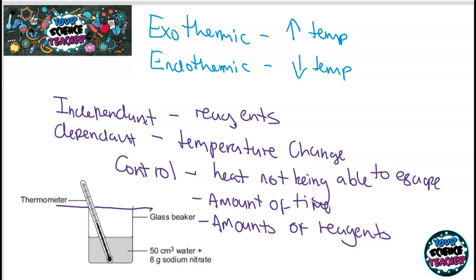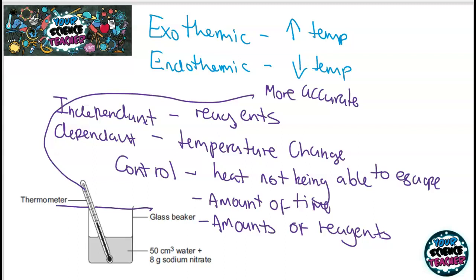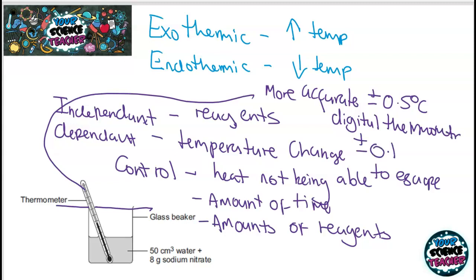You can also improve the accuracy of this experiment. An analogue thermometer works on a liquid moving up or down and can only tell you the temperature to plus or minus 0.5°C. You can make it a lot more accurate by using a digital thermometer that gives the temperature to the nearest plus or minus 0.1°C. To make your results reliable, make sure you take lots and lots of readings.